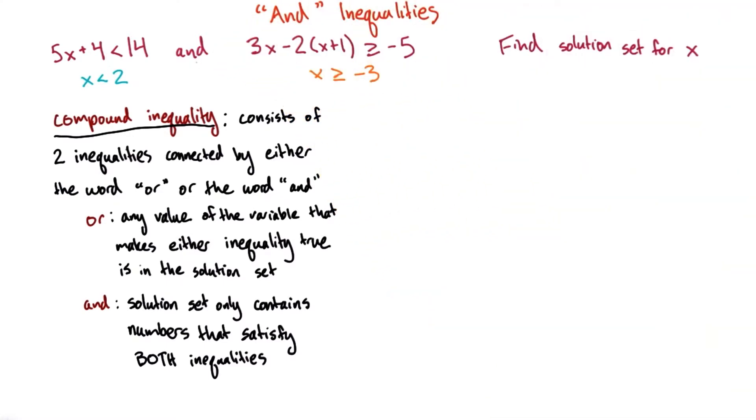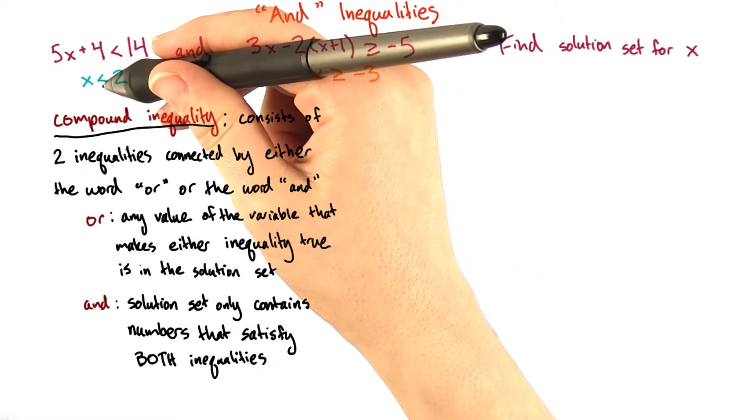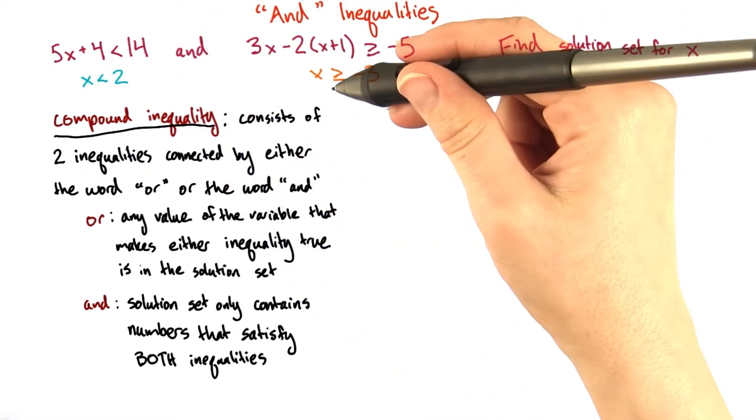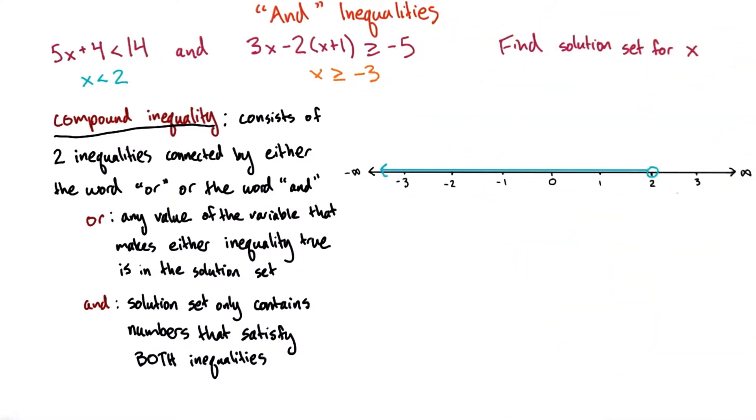Since these are joined by an and statement, we need to find the set of numbers that is true for both x is less than 2 and x is greater than or equal to negative 3. On our number line,